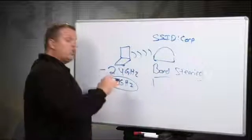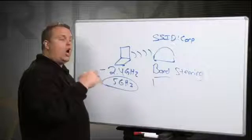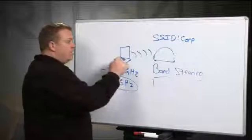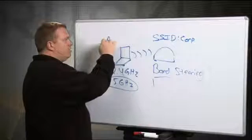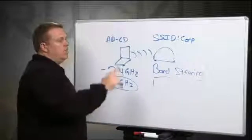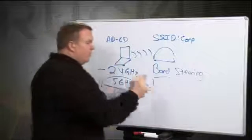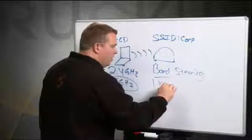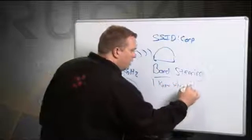And it can do that. It will actually look for probe requests on the 5 GHz band. And if it sees the same MAC address, let's say this guy is AB-CD MAC address, the access point will then remember, so it has to know who is dual band.